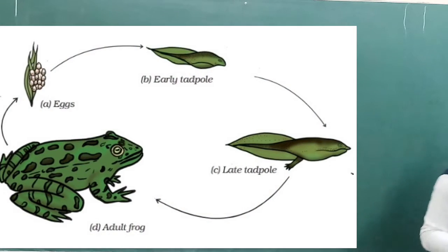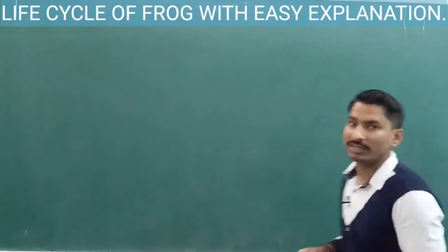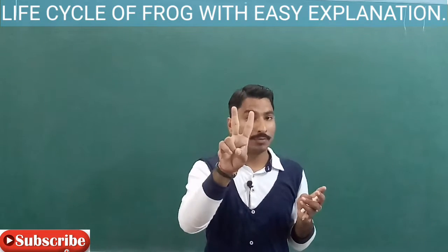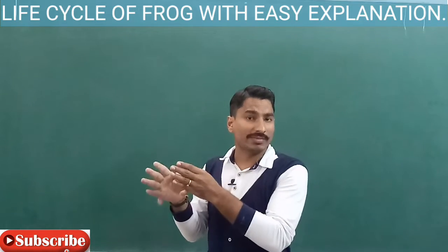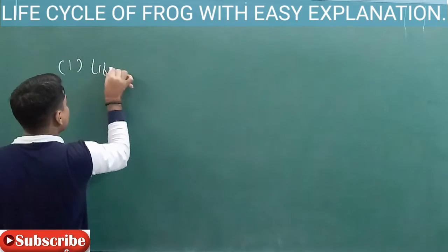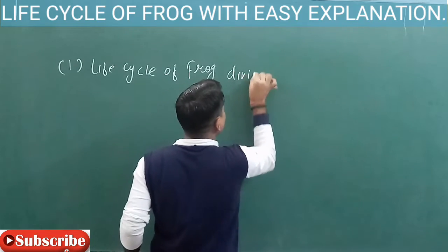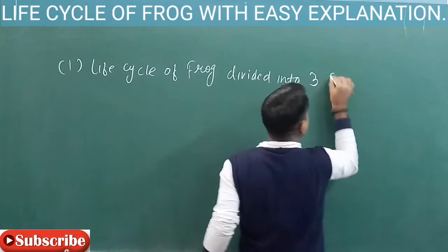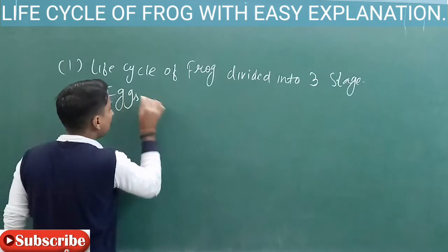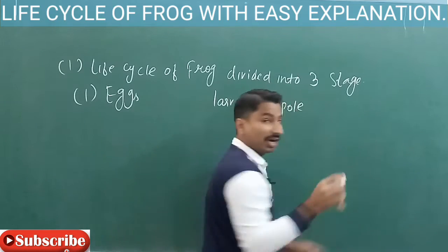On the blackboard, you will see a diagram that shows three stages of the life cycle of frog. First one is X (egg), B is early tadpole, C is late tadpole, and D is adult. When we talk about the life cycle of frog, we divide it into three stages: first one is egg, second one is larva or tadpole, and third one is adult.